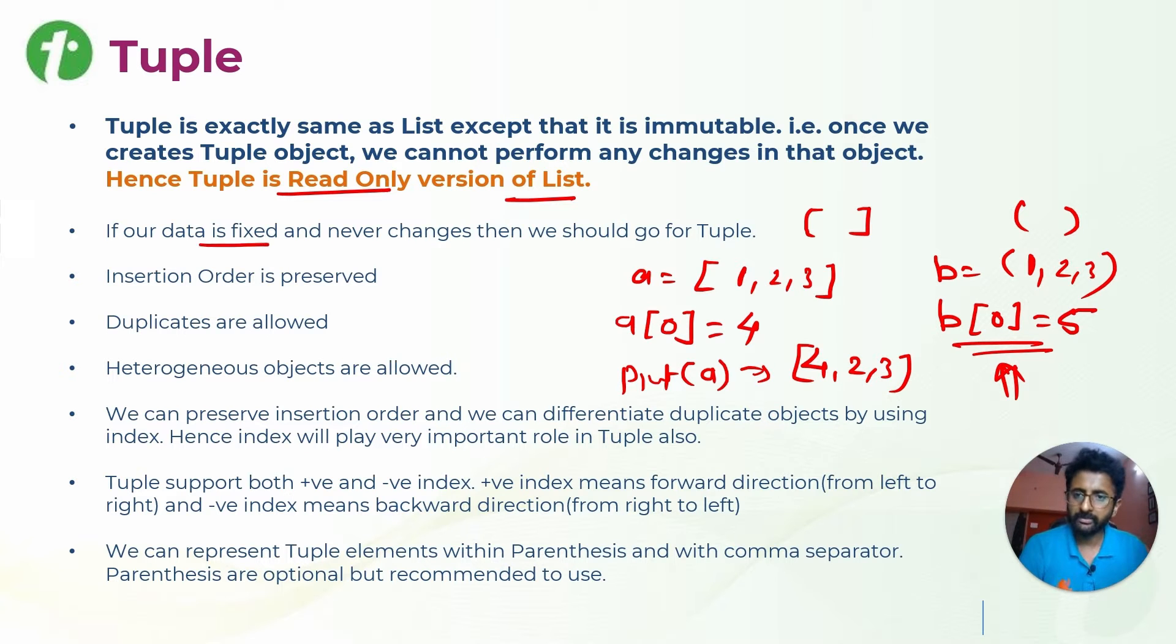If our data is fixed and never changes, then we should go with tuple. Insertion order is preserved, duplicates are allowed, and heterogeneous objects are allowed. These are the same techniques that we have seen in list. We can preserve the insertion order and differentiate duplicate objects by using indexes. For example, if you have n number of same elements, all of their indexes will be different. That's why index plays an important role in tuples as well.